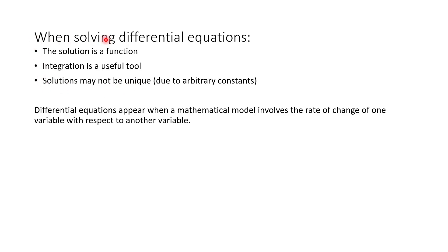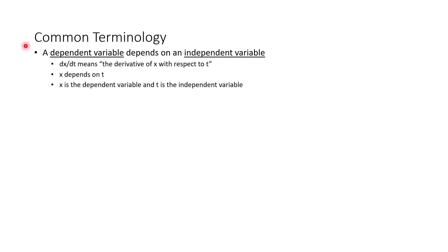The key thing is: when solving a differential equation, the answer is a function. Differential equations appear when a mathematical model involves the rate of change of one variable with respect to another — think of rate of change as a derivative. Some common terminology: a dependent variable depends on the independent variable. For example, the derivative of x with respect to t means x depends on t, so x is the dependent variable and t is the independent variable.